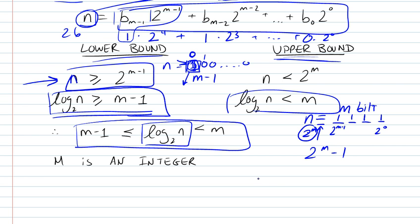This means if we look at a concrete number, say 3.2, then 3.2 is less than a certain number m and greater than or equal to m minus 1.